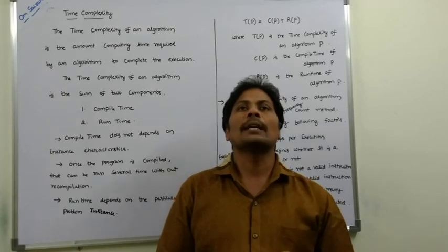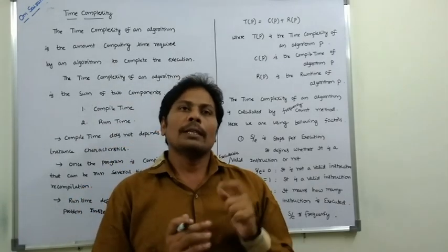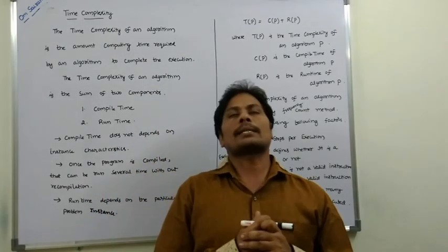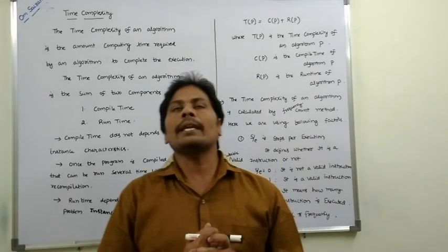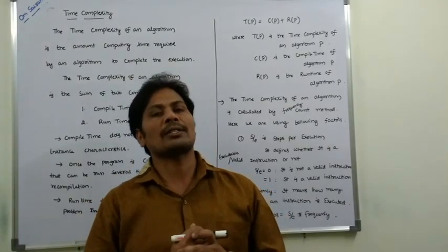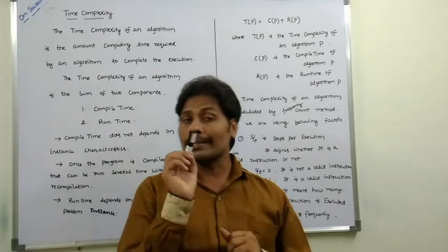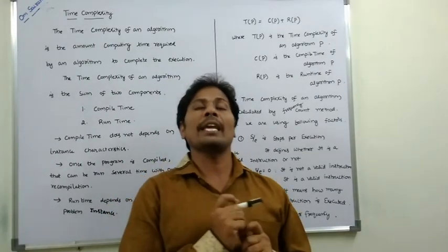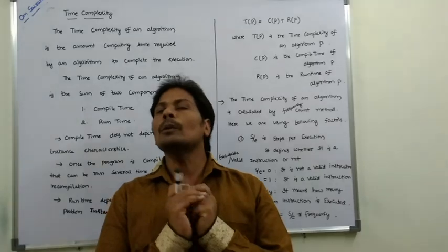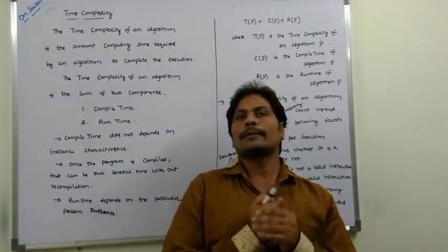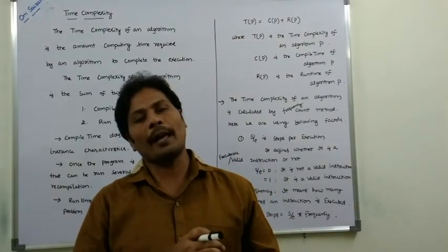Frequency means how many times an instruction is executed. S/E (steps for execution) represents whether it is a valid instruction or not — if S/E equals 0, it is not a valid instruction; if S/E equals 1, it is a valid instruction. The total number of steps equals the product of S/E multiplied by frequency.